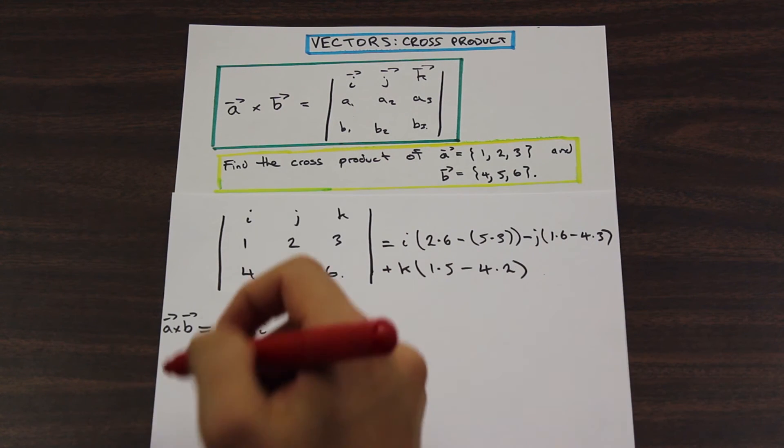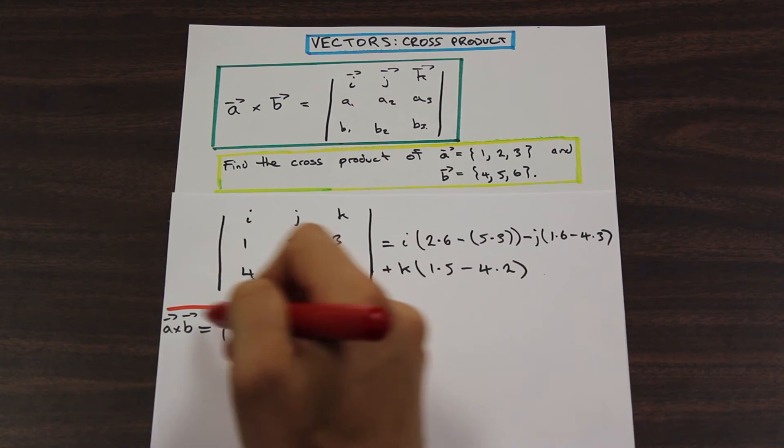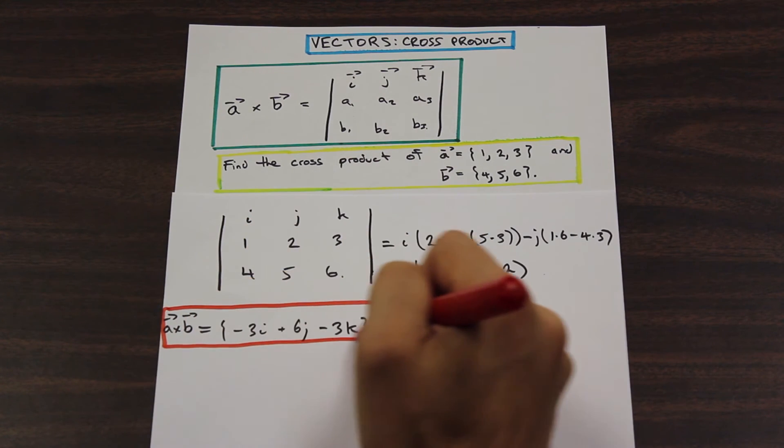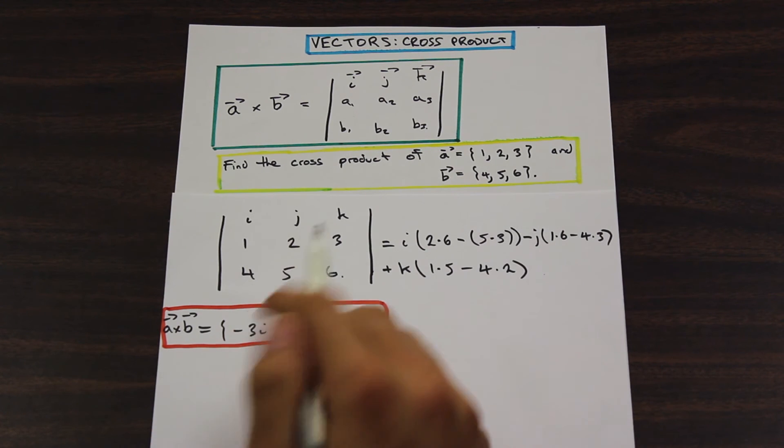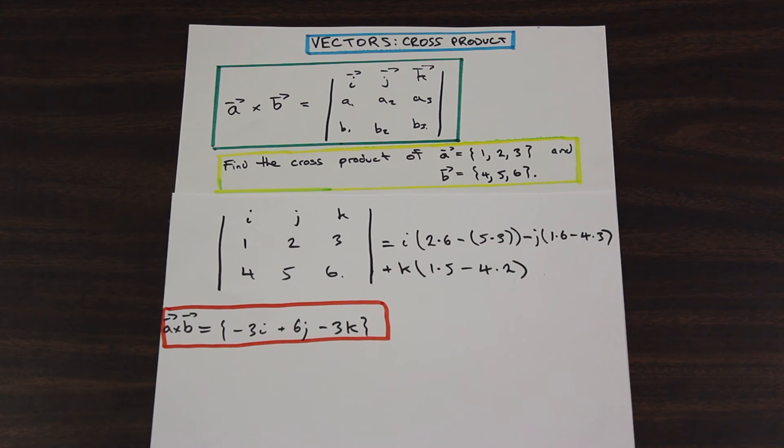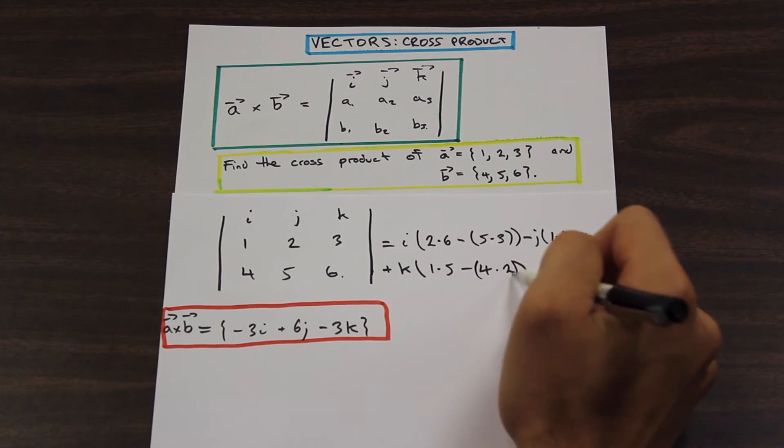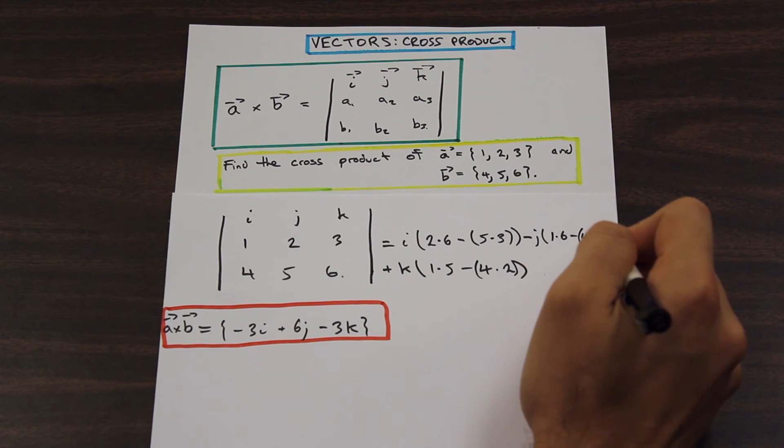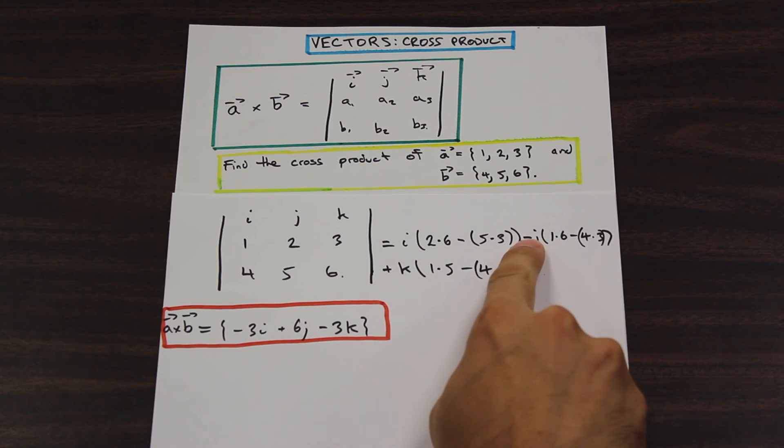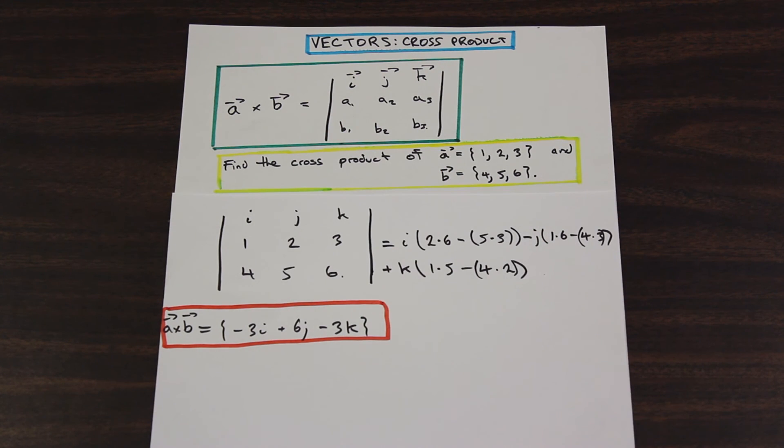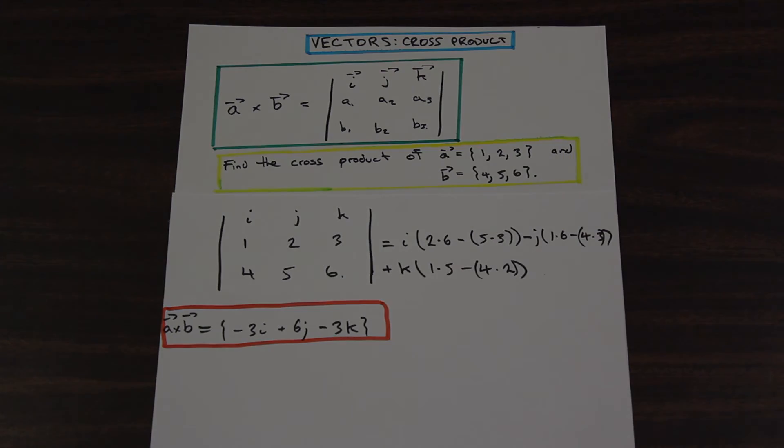And that is our cross product. So simple as that, you know, it can get a little bit more complicated if you have negatives in here. Always remember, include this little bracket here like I did in the first question, and you should be able to avoid a lot of sign errors that can crop up, and also remember that the J component is always subtracted. Thanks for watching, quick video here, stay tuned for more.